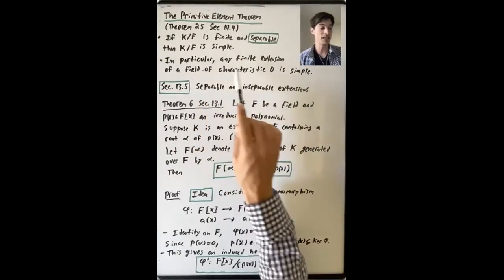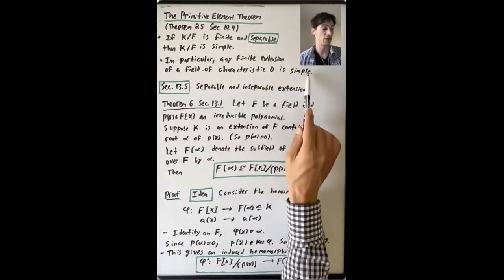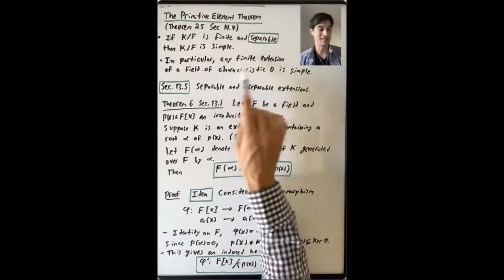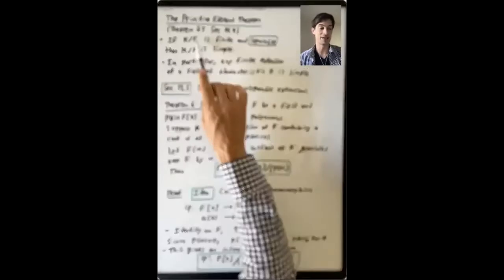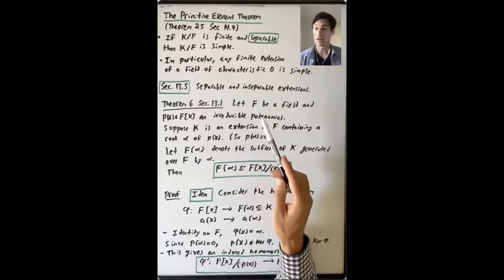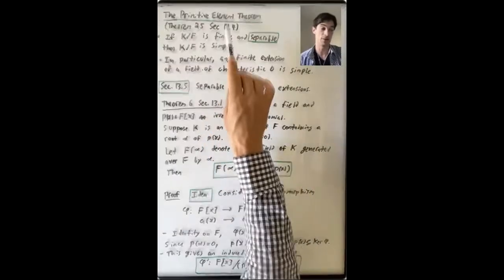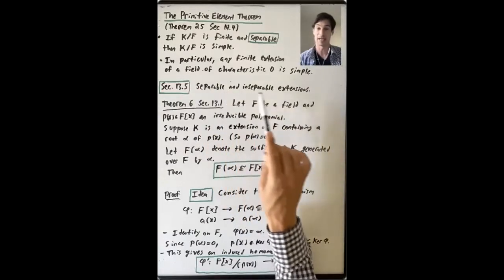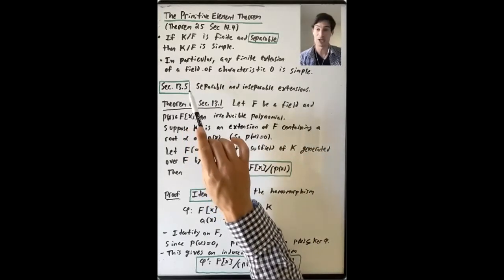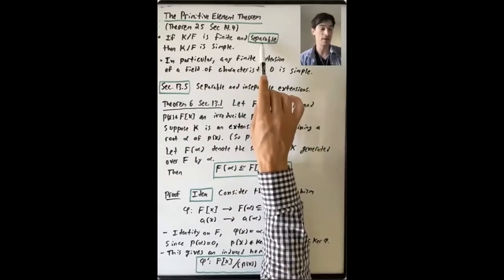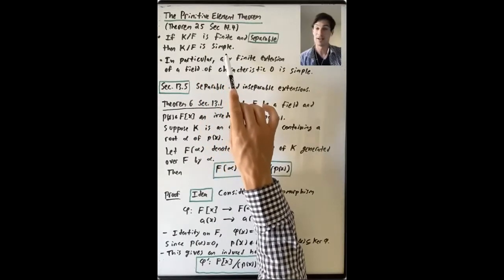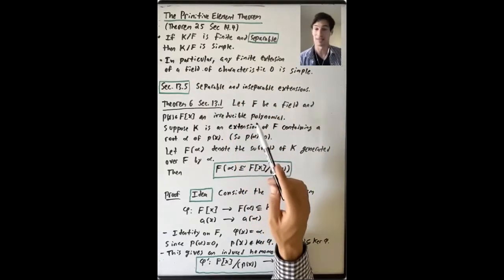The Primitive Element Theorem says: if K over F is finite and separable, then this extension is simple. A consequence is that any finite extension of a field of characteristic zero is simple. This is saying that any finite extension of a field of characteristic zero automatically has the property of being separable. What does separable mean? That I'm not going to tell you right now, but Section 13.5 is all about separable and inseparable extensions. This property of being separable is going to be important in understanding whether or not an extension is simple.